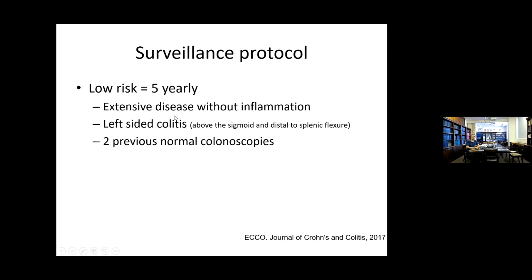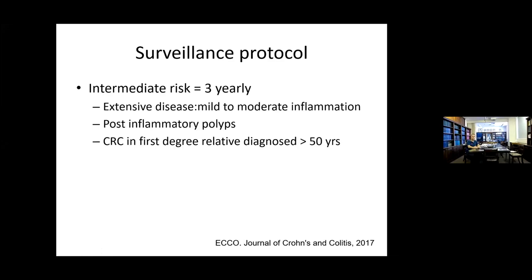Low risk — five-yearly colonoscopies — would be patients with extensive disease or pancolitis without inflammation, left-sided colitis above the sigmoid and distal to the splenic flexure, and if you've had two previous normal surveillance colonoscopies. Intermediate risk — three-yearly — would be extensive disease with mild to moderate inflammation, patients with post-inflammatory polyps, or a first-degree relative with colon cancer diagnosed over 50. These patients would be in three-yearly, and then if they had a normal colon three years later, they would be enrolled in five-yearly.